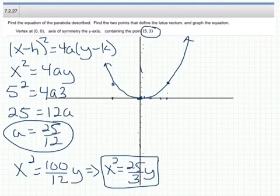The last thing we need to do is find the latus rectum. The latus rectum is the line that is perpendicular to our axis of symmetry, perpendicular to the y-axis, and passes through the focus. Remember, a is the distance from the focus to the vertex, so the focus must be at 25 over 12 units away from 0, 0, which is about a little bit over 2 units away. So 25 over 12 is right about there for our focus.